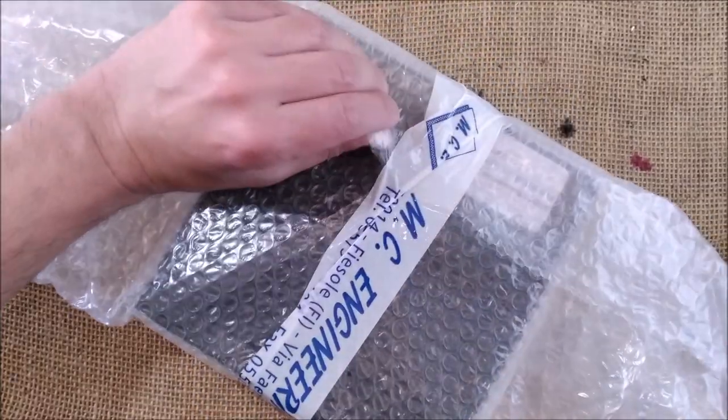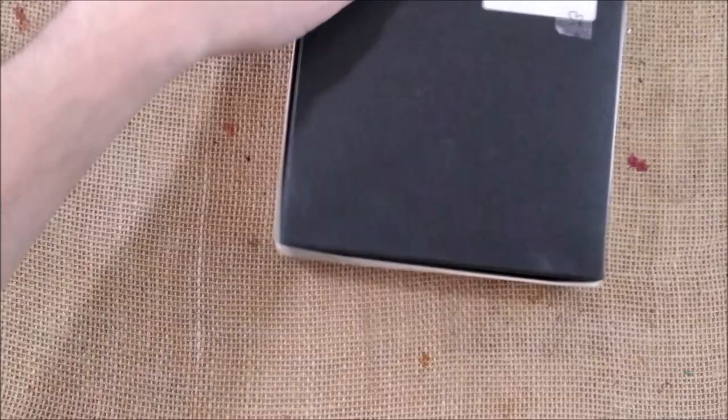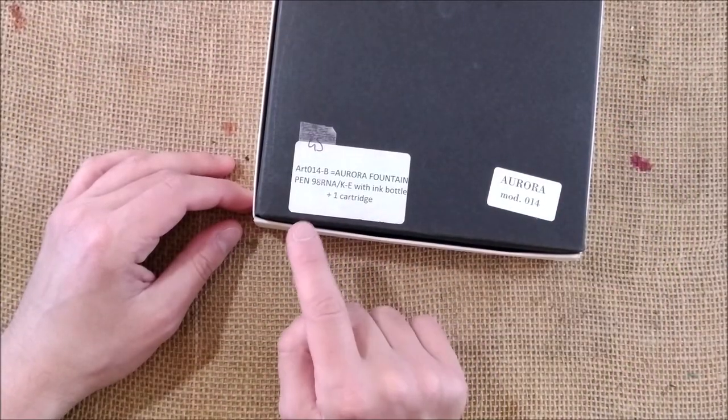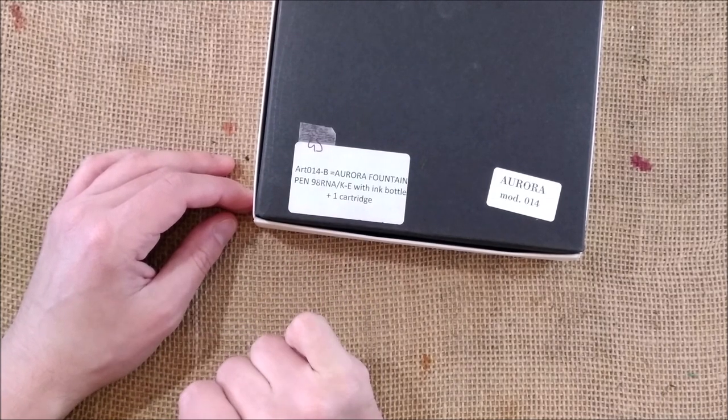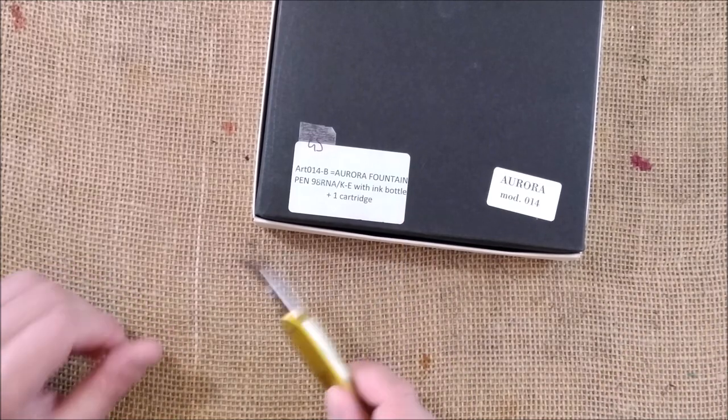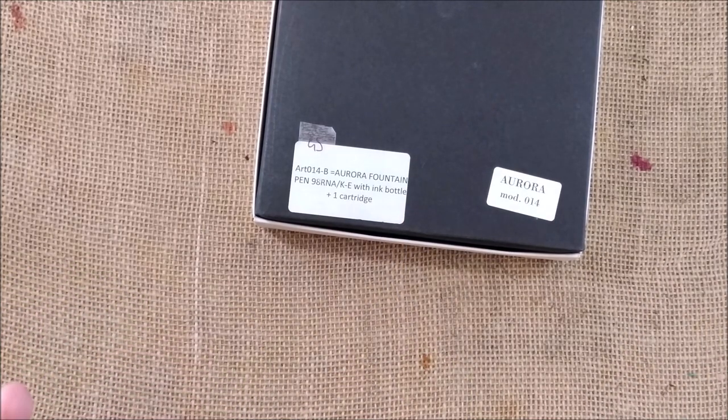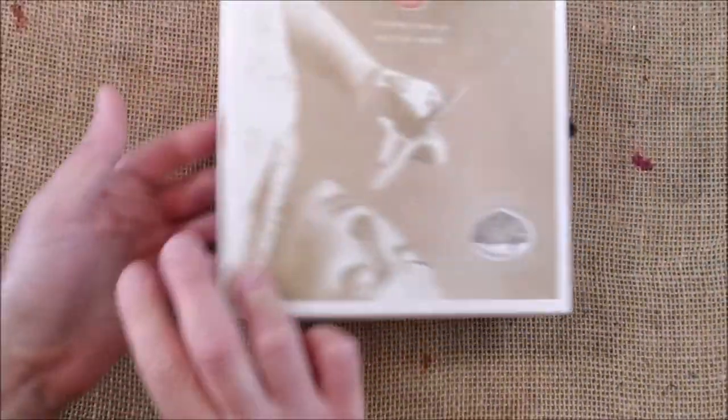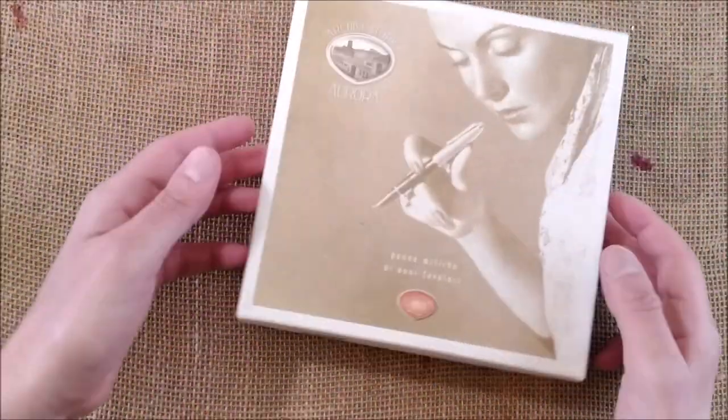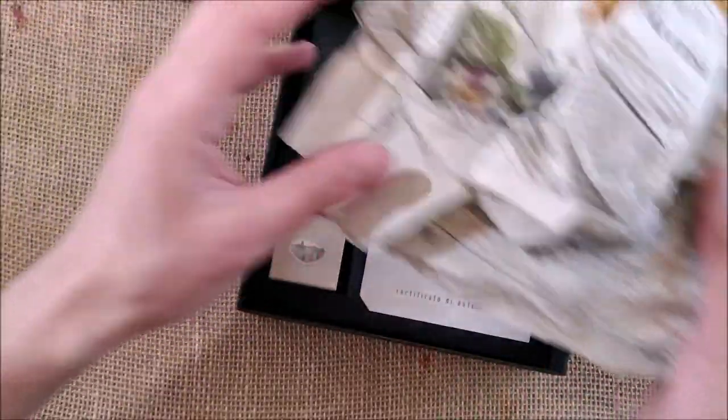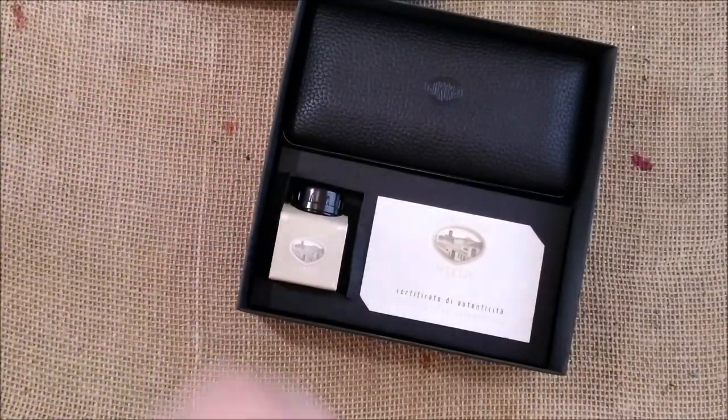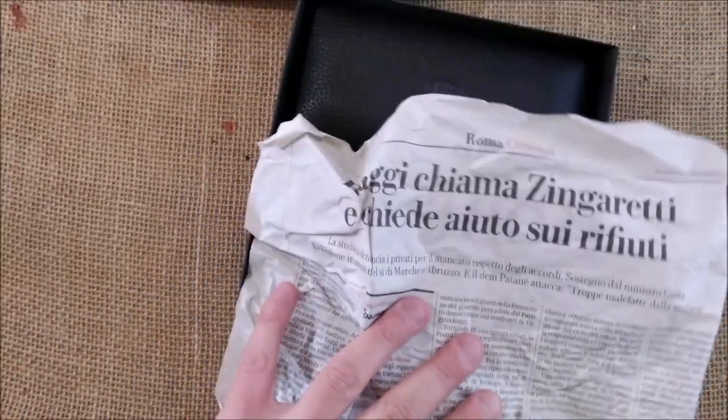That comes inside this nice bag. It says here, Aurora fountain pen 98. So now you know this is an Aurora 8098 with ink bottle and one cartridge. However, I will talk to you about this identification issue in a moment. Let's open the box. It has some extra protection inside. Newspaper. Italian newspaper.